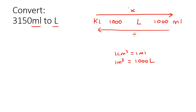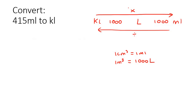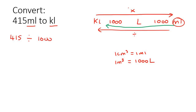Now we're going from millilitres to litres, which means going left on the chart, so we divide. 3,150 divided by 1,000 gives us 3.15 litres — don't forget to include the units. Next, we're converting millilitres to kilolitres, going all the way to the left. We divide by 1,000 and then divide by another 1,000. Working that out gives us 0.000415 kilolitres.